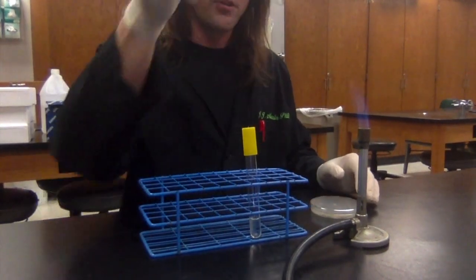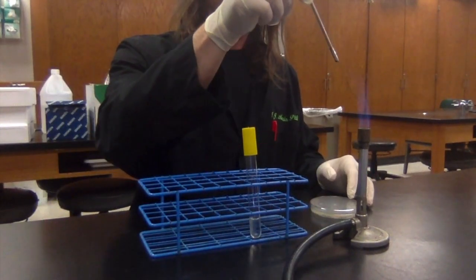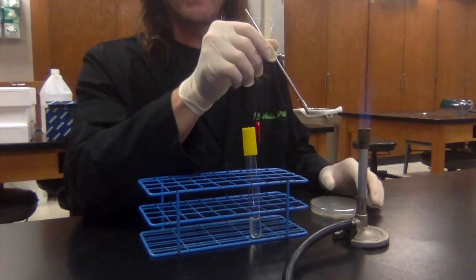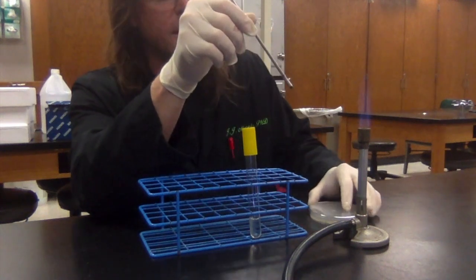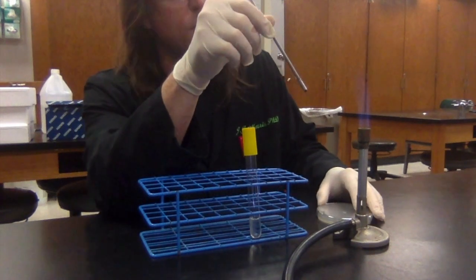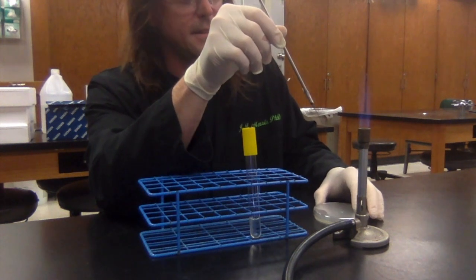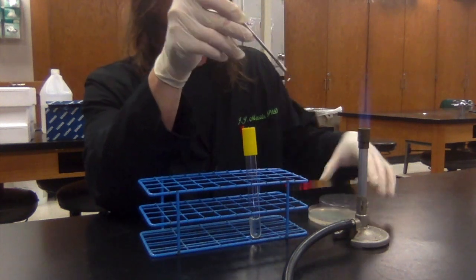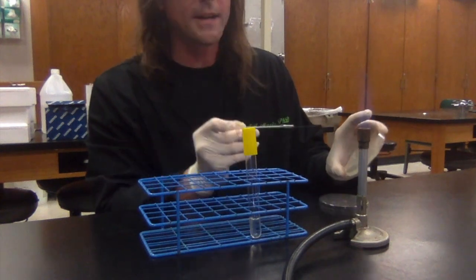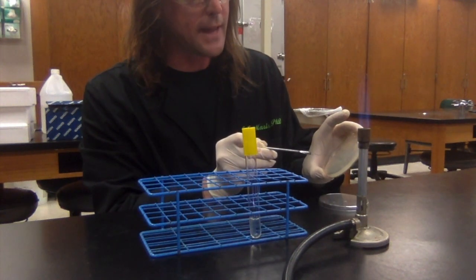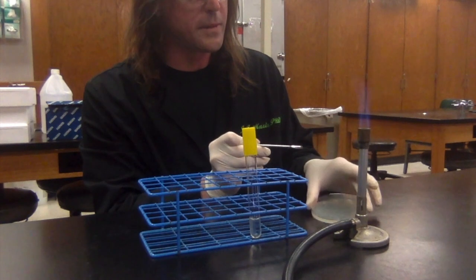What I'm going to do is take my loop and flame it, holding it downwards at a 45-degree angle until it's red hot. Give it a count of 10 to cool off so I don't kill all my bacteria. Four, five, six, seven, eight, nine, ten. Now I'm going to pick one colony off of this plate and just lightly touch it with the loop. I don't need much material at all.